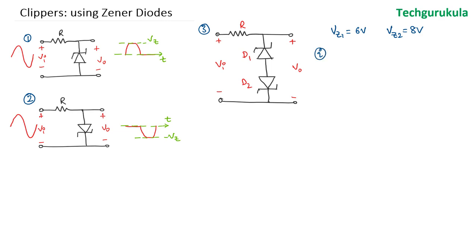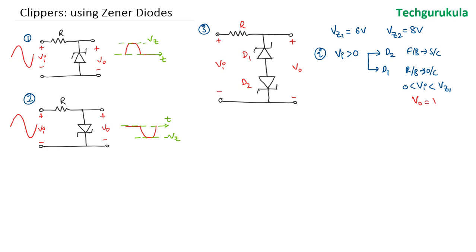First case: D1 is going to work on the positive half of the wave and D2 is going to work on the negative half. When VI is greater than 0, D2 is going to be in forward bias and short circuit. We only need to worry about D1. D1 will be reverse biased and acts like an open circuit if the input voltage is between 0 and VZ1.